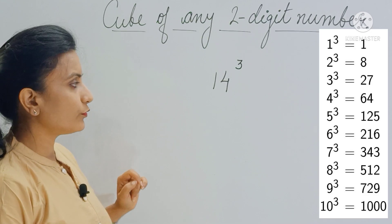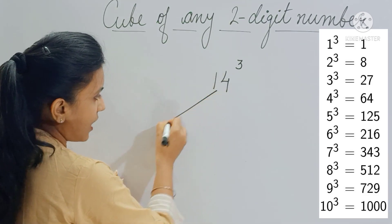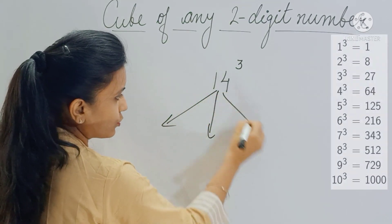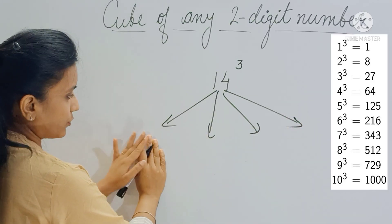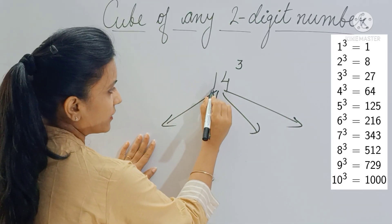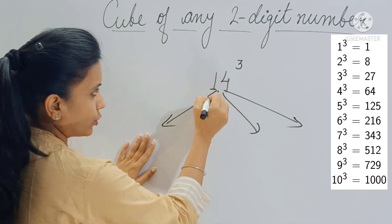So here the answer is divided into four parts. Let's see what are those four parts. The first part you get is by finding the cube of the first digit, so cube of 1 is 1.